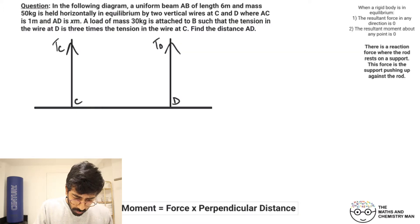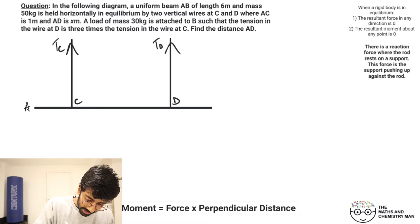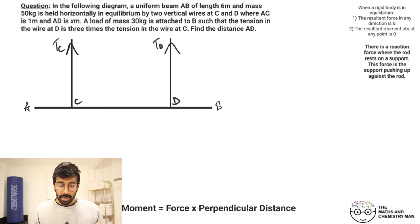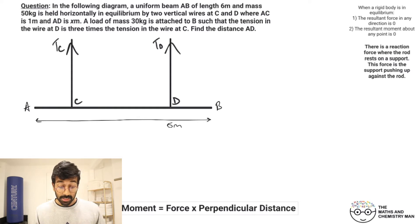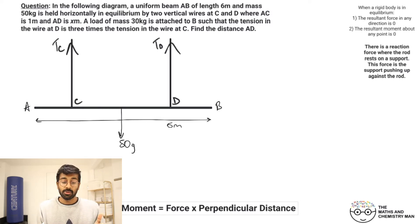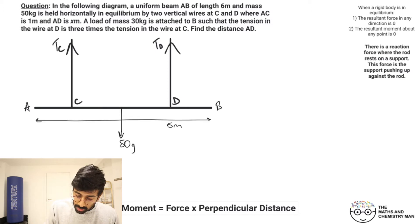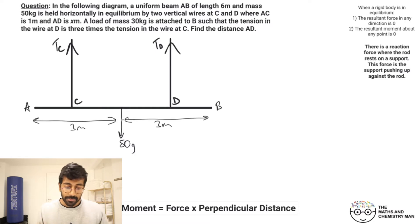In the following diagram we've got a uniform beam AB. Let's label the start as A and the end as B. It's got a length of six meters, and a mass of 50 kilograms. It's uniform, which means bang in the middle we're going to have 50g. That means three meters on the left and three meters on the right.